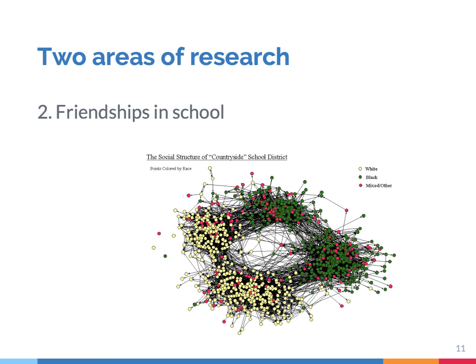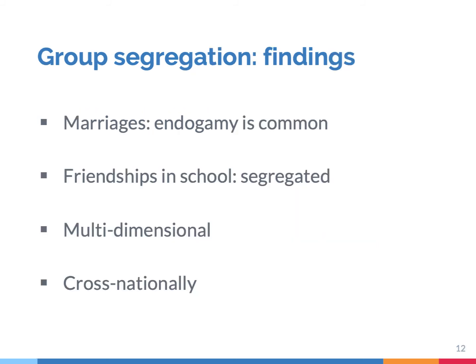The second area of research is the study of adolescents in school. Sociologists study whether their friendships are segregated by group affiliations such as race and gender. Studies show that endogamy is very common — many people marry someone from their own group — and research on adolescent friendship networks in school reveals strong levels of segregation.